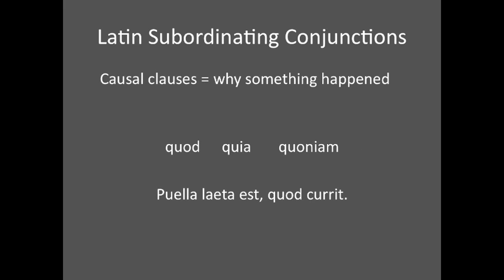Causal subordinate clauses explain why something happened. They are introduced by quod, quia, and quoniam. For example, puella laeta est quod currit — 'The girl is happy because she runs.' The quod currit clause is separated by the comma and signaled by the subordinating conjunction. The clause also explains why the girl is happy, namely because she is running.